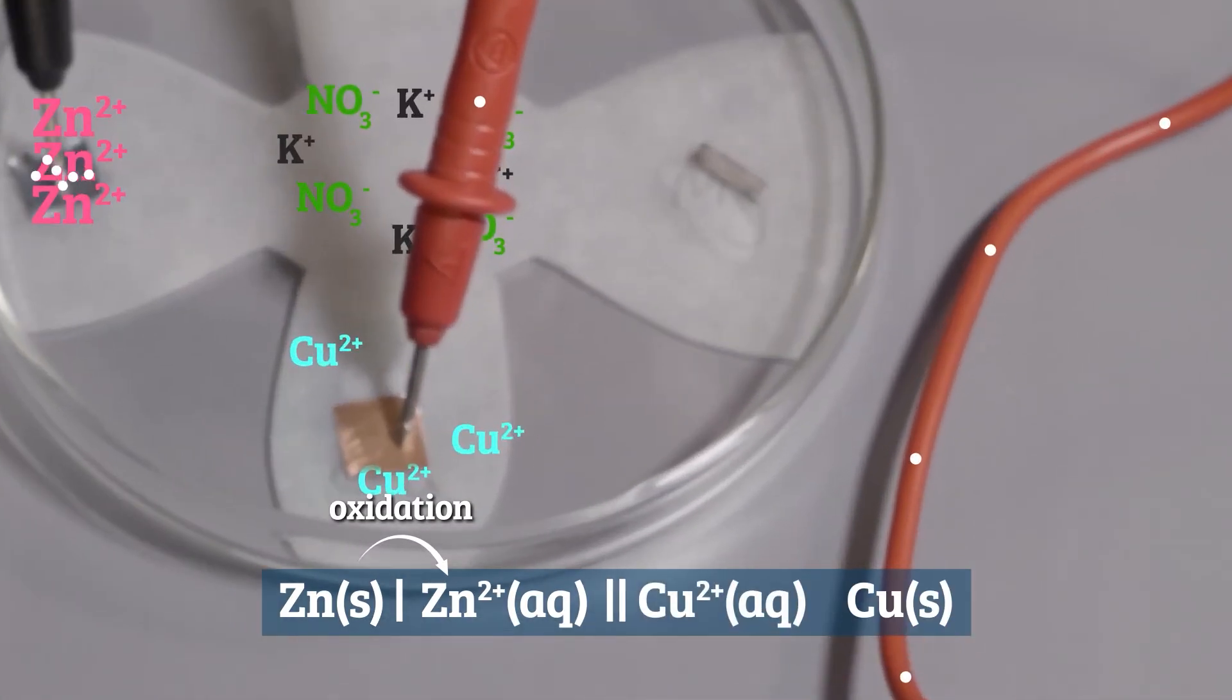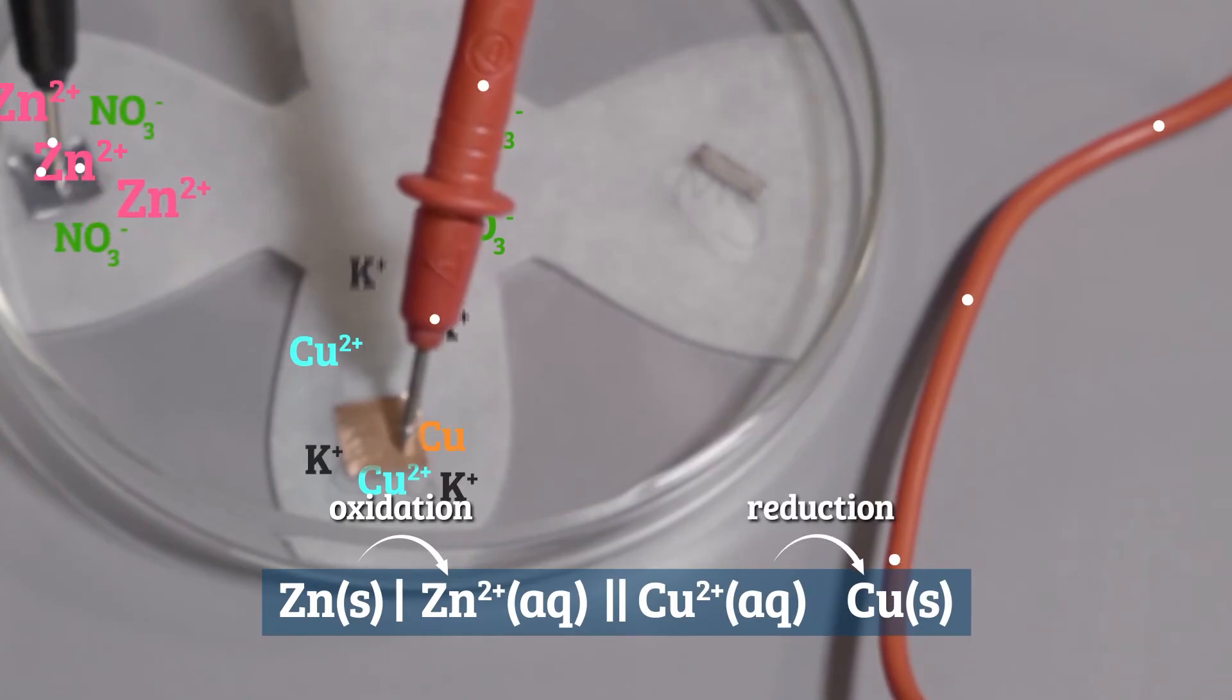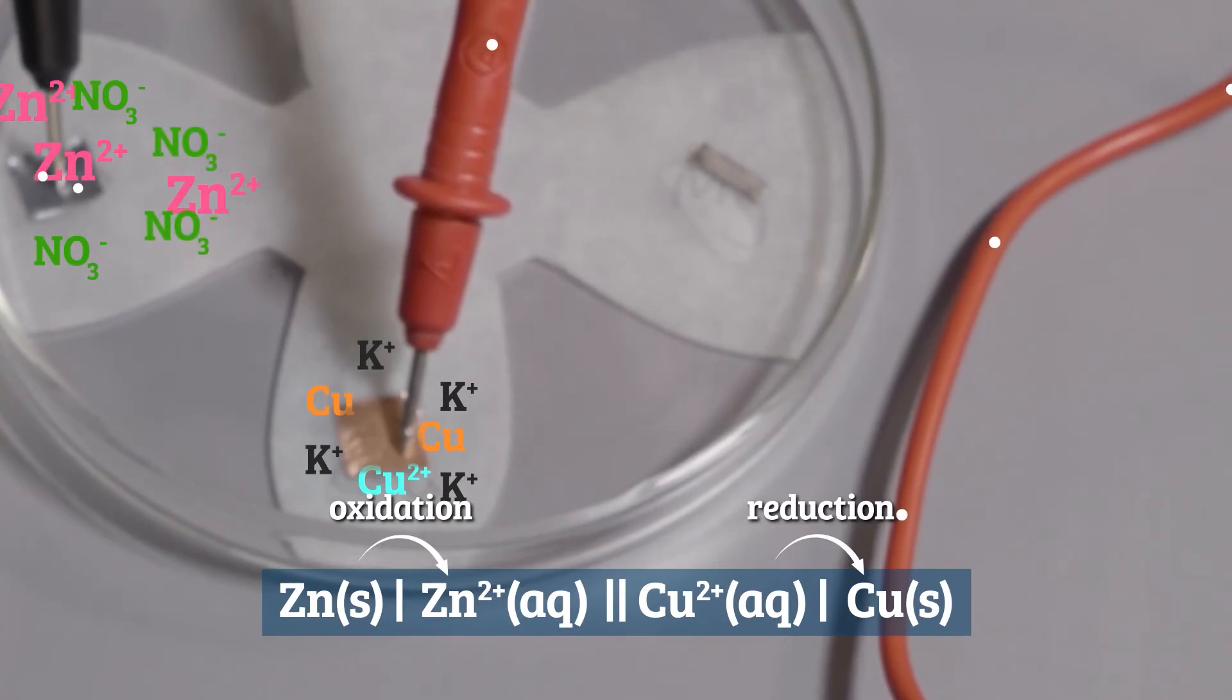The copper half cell is the positive one, so because reduction is occurring, we need to put the components in order of decreasing oxidation state. Again, we add a phase boundary between the solid copper and the copper ions. Keep in mind the flow of electrons when building cell diagrams to help you build them correctly.